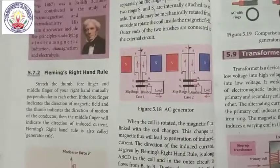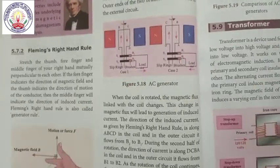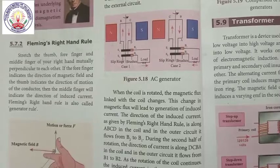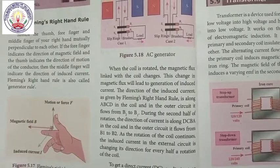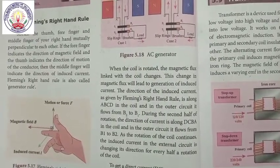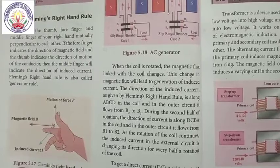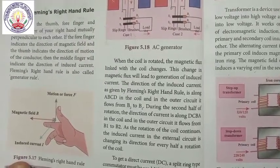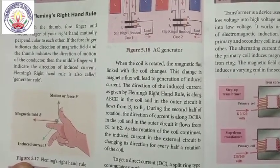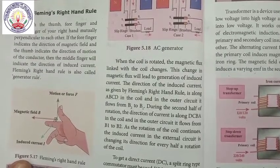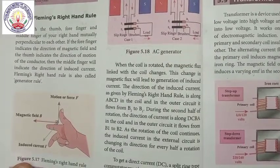When the coil is rotated, the magnetic flux linked with the coil changes. This change in magnetic flux leads to generation of induced current. The direction of the induced current is given by Fleming's right-hand rule. Current flows along ABCD in the coil and in the outer circuit flows from B2 to B1. During the second half of the rotation, the direction of the current is along DCBA in the coil, and in the outer circuit it flows from B1 to B2. The induced current in the external circuit changes direction every half rotation of the coil. To get a direct current DC, a split-ring commutator must be used.